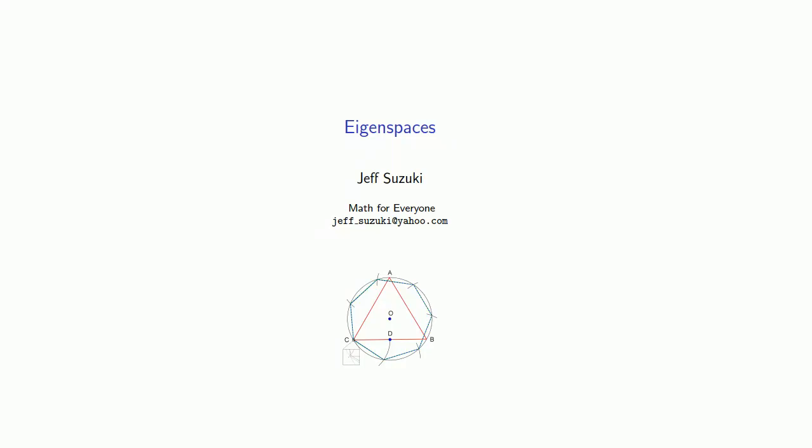The fact that eigenvalues produce eigenvectors allows us to consider what we might call an eigenspace. Before we do that, we'll have to take a look at some important ideas.